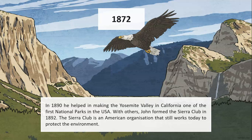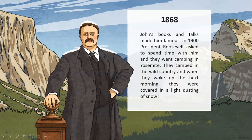In 1890, he helped in making the Yosemite Valley in California one of the first national parks in the USA. With others, John formed the Sierra Club in 1892. The Sierra Club is an American organization that still works today to protect the environment. John's books and talks made him famous. In the 1900s, President Roosevelt asked to spend time with him and they went camping in Yosemite. They camped in the wild country, and when they woke up the next morning, they were covered in a light dusting of snow.